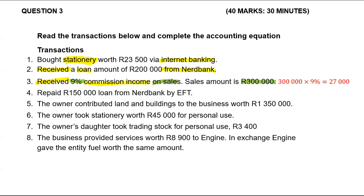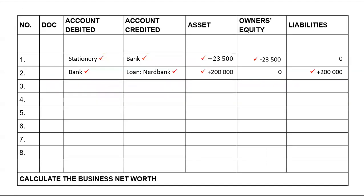We're getting 27,000 more into our bank account, and at the same time we are getting income, which is commission income. Assets will be affected because bank will be increasing, and bank increases on the debit side because it's a current asset. Commission income is income — income increases on the credit side. Remember SILK and DEAD: SILK stands for capital and income which increase on the credit side; DEAD stands for drawings, expenses, and assets which increase on the debit side. Assets will increase by 27,000 and income increases owner's equity — that's why under owner's equity we've got 27,000. Under liabilities we have zero.